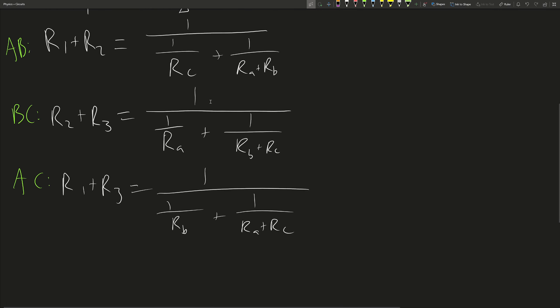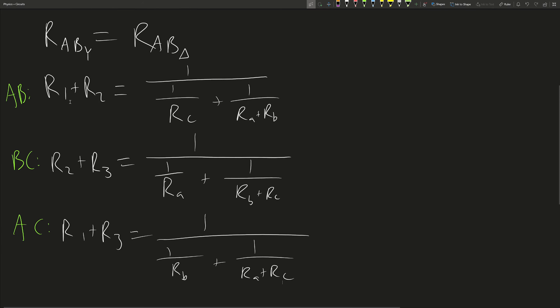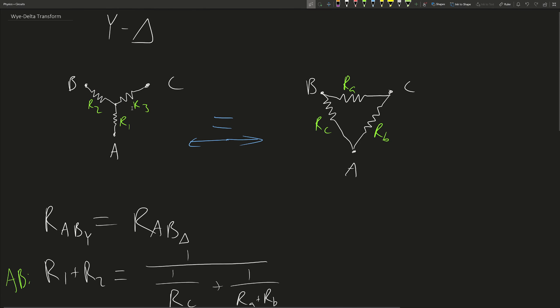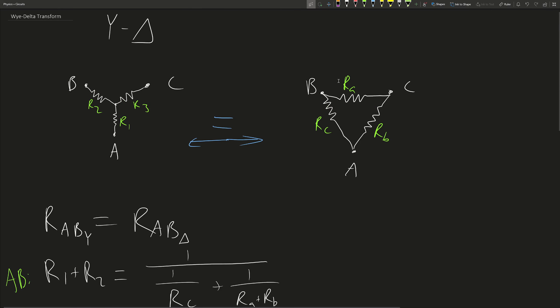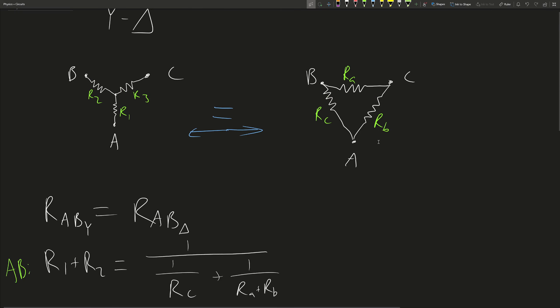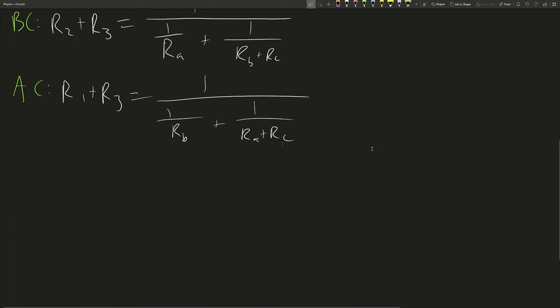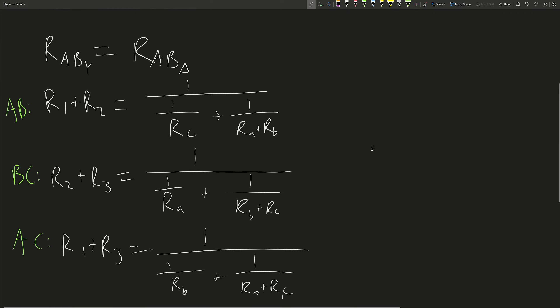These equations are symmetric because they all have the same exact form — the variables are just rearranged. These names are also given arbitrarily; I could have called R3 R1 and R1 R3, and the equations would end up the same. So we only need to solve for one resistor on each side to get the equation for any of them.